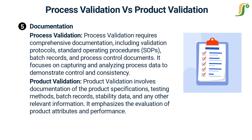In summary, process validation primarily focuses on establishing and maintaining control over the manufacturing process, while product validation specifically assesses the final pharmaceutical product. Both validations are essential in ensuring the quality, safety, and efficacy of pharmaceutical products, albeit with different scopes and objectives.